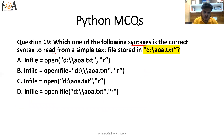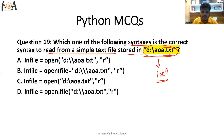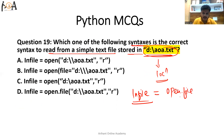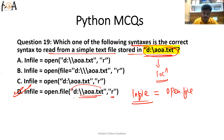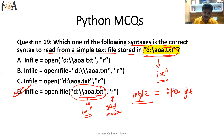Question number 19: which of the following syntaxes is correct to read from a simple text file stored at a given location on your PC? The syntax used is: file = open.file(location, "r"), where the location is the path of your file in memory and 'r' stands for read mode. So option D is the correct answer — the function is open.file, and r is for read mode.